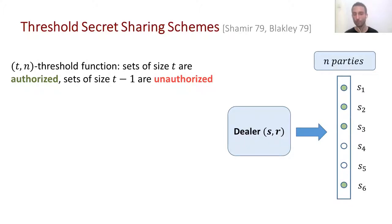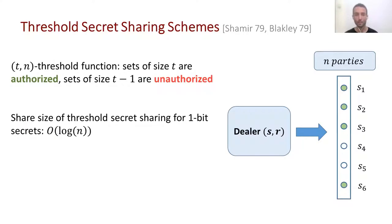Moving on, the most known and studied access structure is the threshold one. A T-out-of-n threshold access structure is where every subset of parties of size T is authorized and all sets of size T minus one are unauthorized. These threshold access structures were introduced by Shamir and Blakely in 1979. Since then, they had the interesting property where the sizes of the shares were relatively small — only logarithmic in the number of parties.